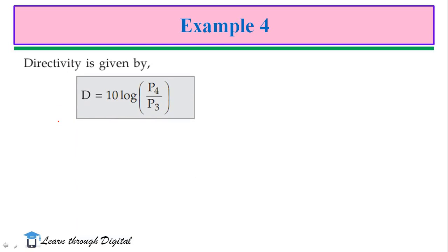Next, from the directivity, we can find the power at port 3. We substitute 35 is equal to 10 log of 0.9 by P3.